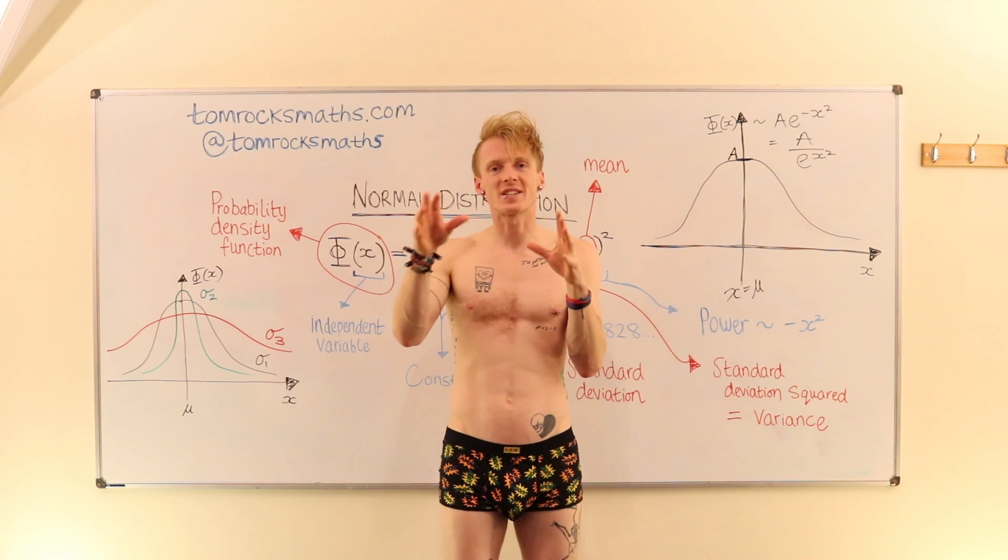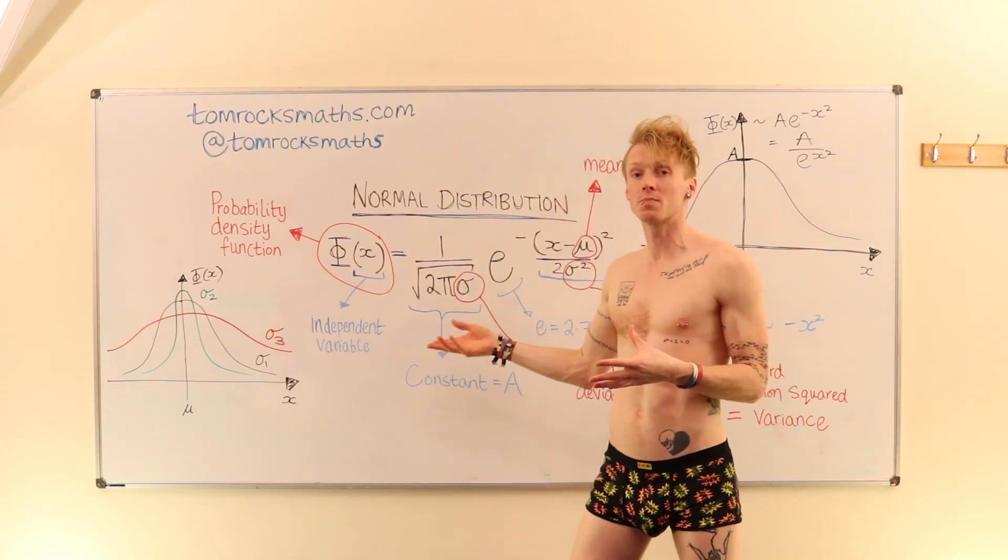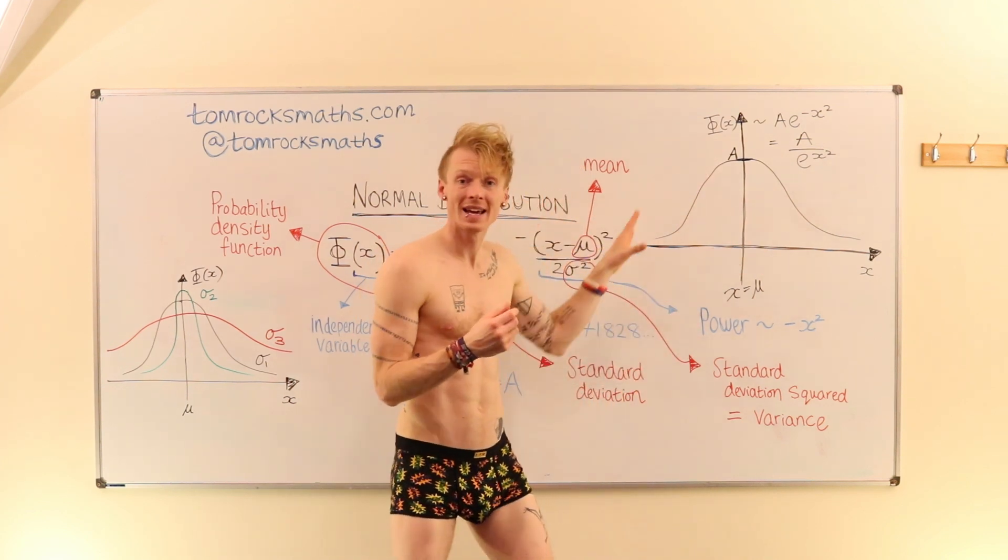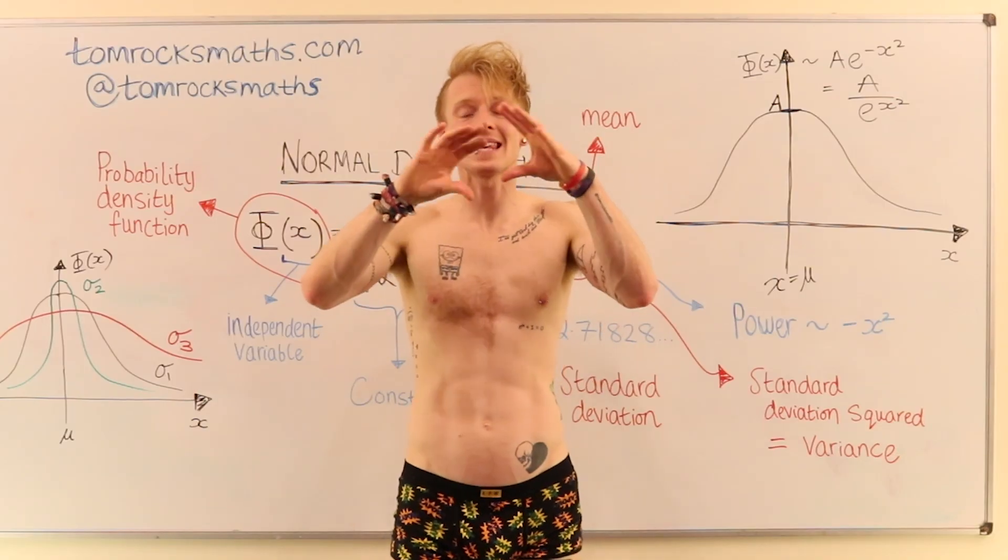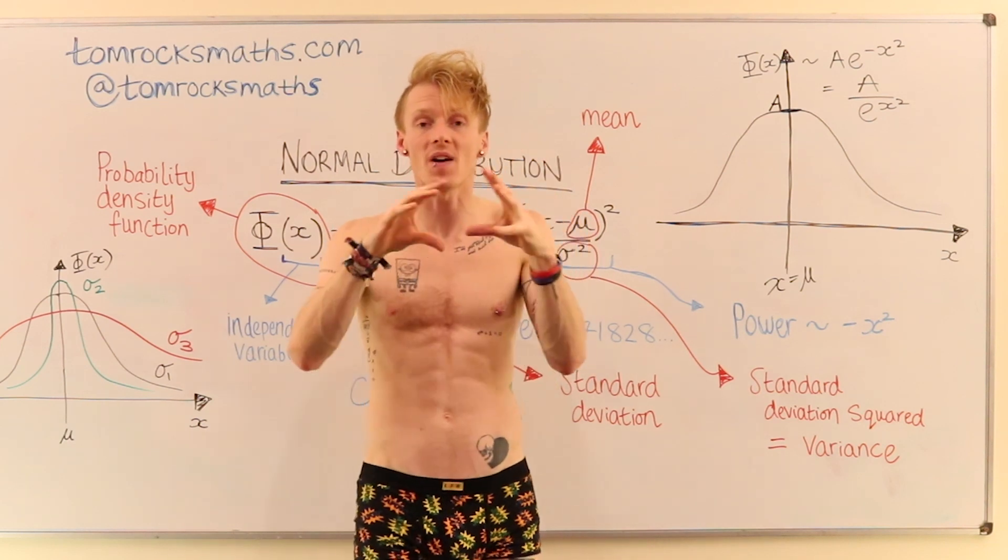So this relates back to layer one, when I was talking about all of the different sets of data that can be modelled by our normal distribution, precisely because they have this bell-shaped characteristic curve to the data.